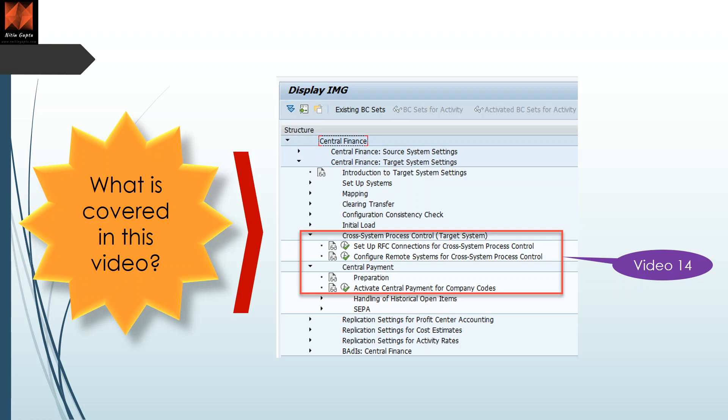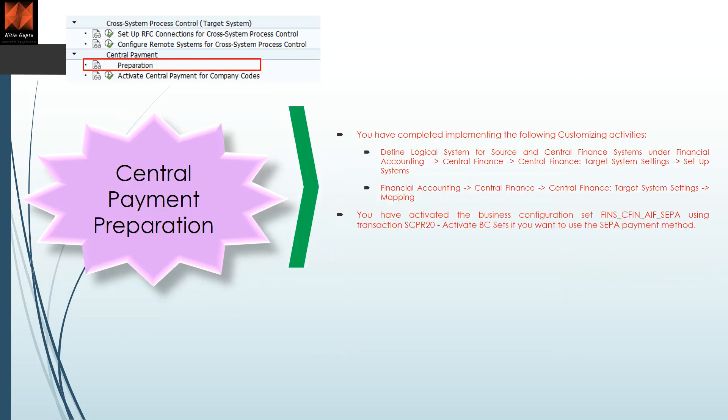So what is central payment? Central payment is a functionality — there is a detailed description in another video on the channel. Essentially, when your vendor invoices and customer invoices are replicated from an ECC system to the CFIN system, you can decide to make payments of those invoices from your central system. If you have multiple ECC systems, you don't need to make payments from every different system — you can make and receive payments in one central system, which simplifies your accounting and reporting processes.